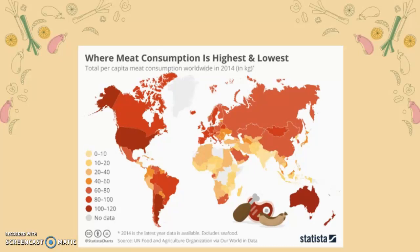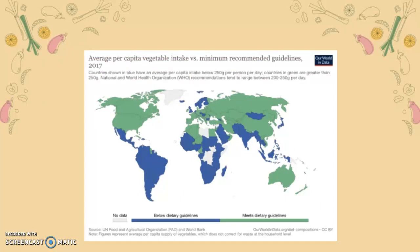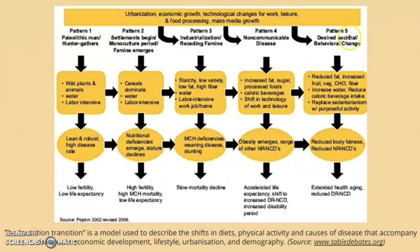For meat consumption in 2014, the highest was in North America, the United States, Australia, and parts of South America. The lowest was concentrated in Africa, India, and other Southeast Asian countries. These regional variations are key examples of the nutritional transition model.